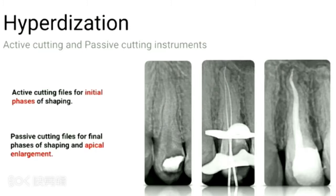In the past, maybe eight years ago, I used to manage S-shaped canals by hybridization using active and passive cutting instruments. Active cutting instruments were used for initial phases of shaping, not to enlarge the canal apically, because if I used them apically I would mostly end up with a smaller, straighter canal. So I would shift to passive cutting instruments for apical finishing.